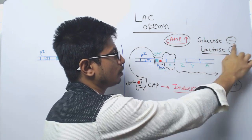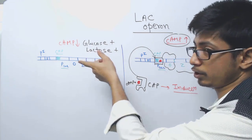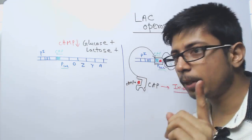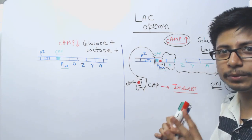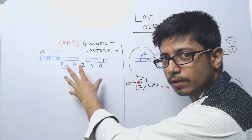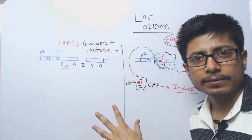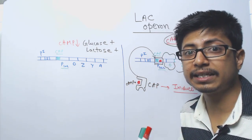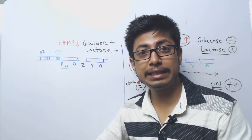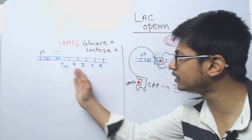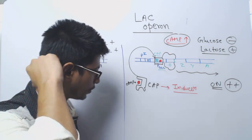Now let's focus on the next scenario: lactose is present but so is glucose. According to our general theory, if lactose is present the lac operon should be turned on. But remember, bacteria will not turn the lactose operon on fully until they deplete all the glucose. If glucose is present in the medium, their job is to take up glucose until it is depleted. So they will not turn the lac operon on until and unless the glucose is gone from the environment. How do they regulate this process? Let us see.